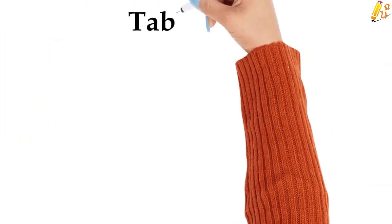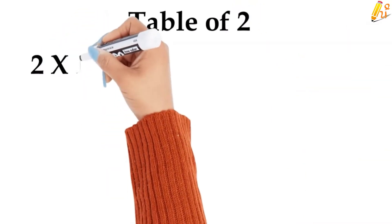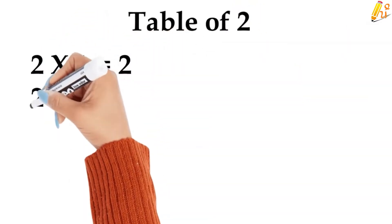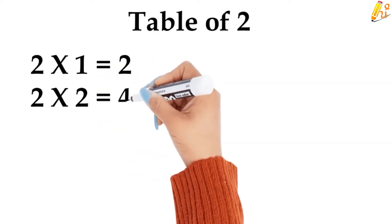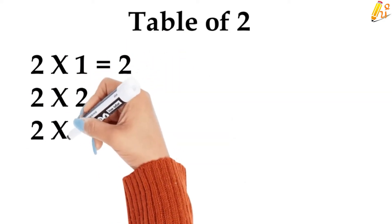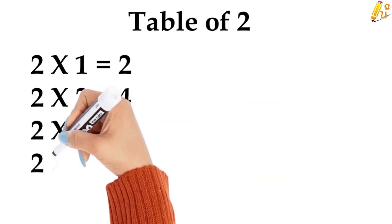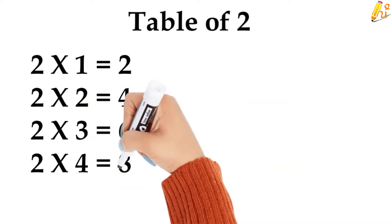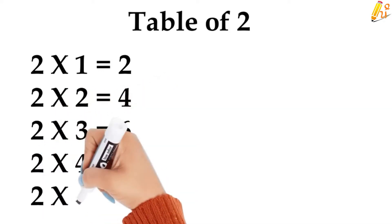Table of 2: 2 1s are 2, 2 2s are 4, 2 3s are 6, 2 4s are 8, 2 5s are 10